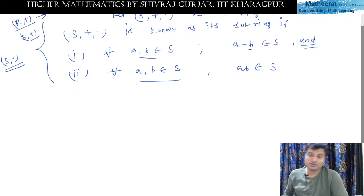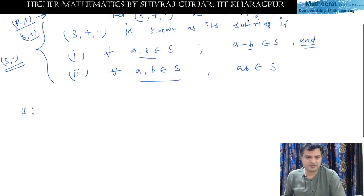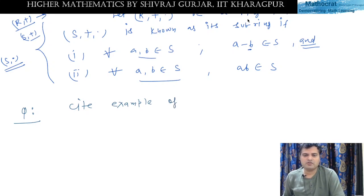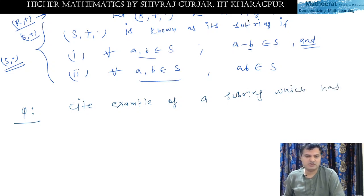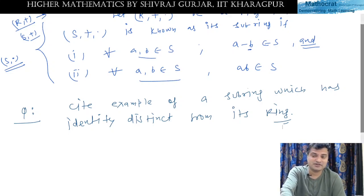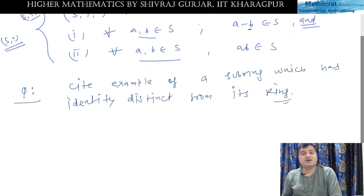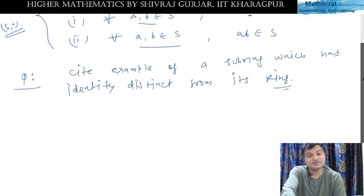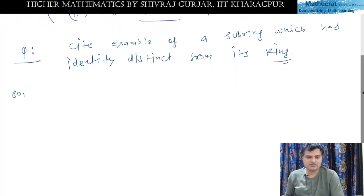Now let's look at some questions. There is an example: find a subring which has an identity distinct from its ring's identity. In fact, it is also possible that a ring has an identity and its subring has a different identity. Let us look at an example of this type.